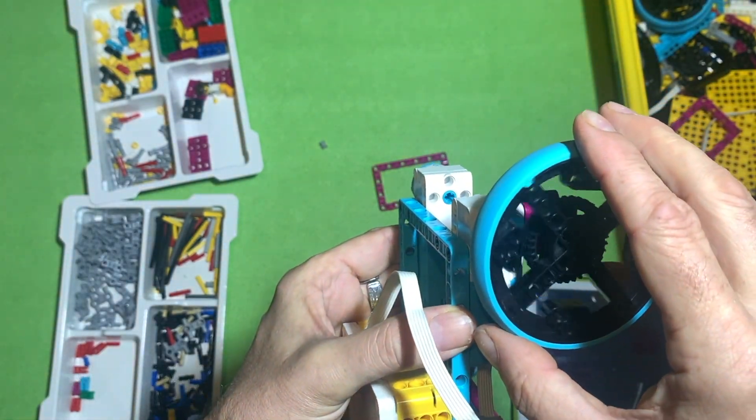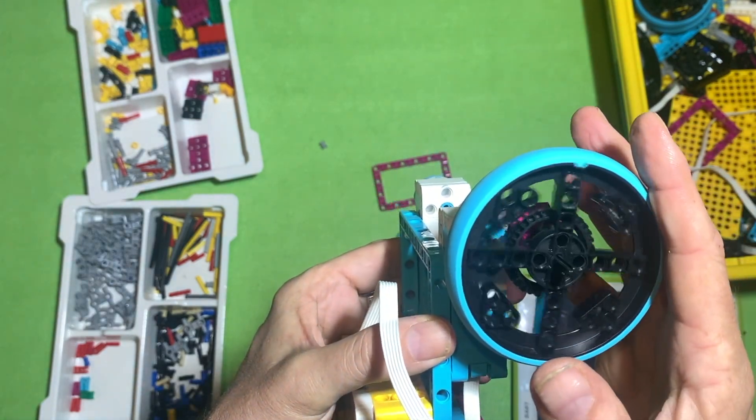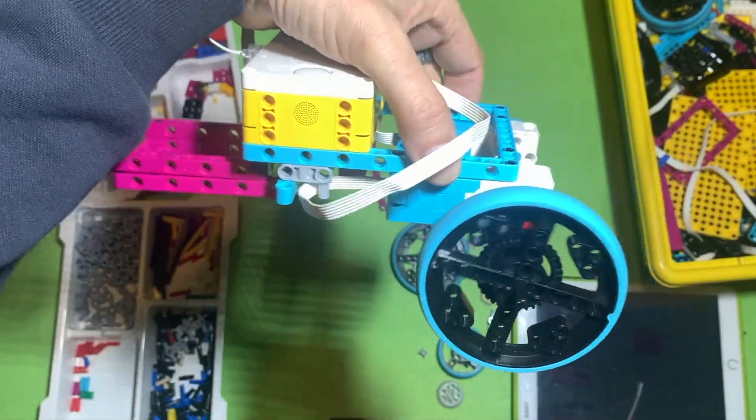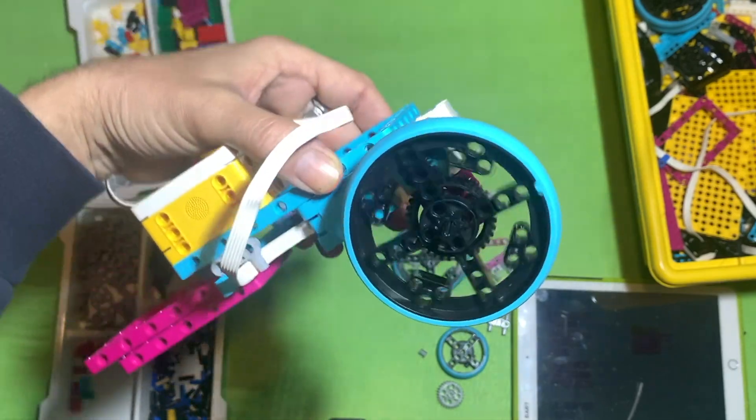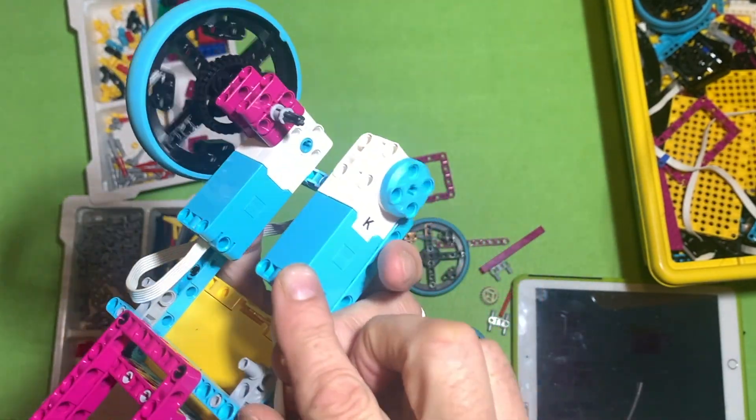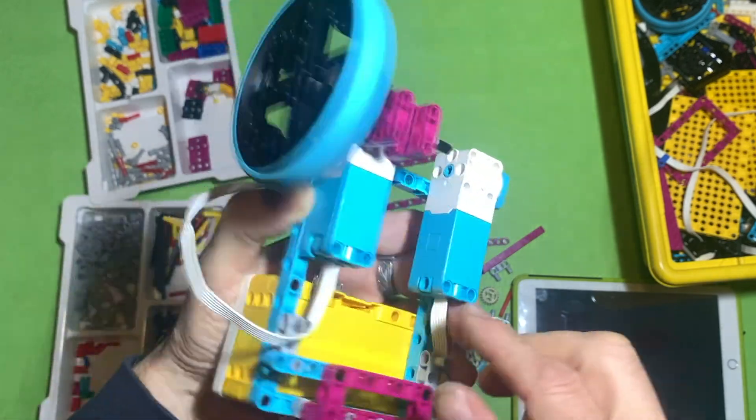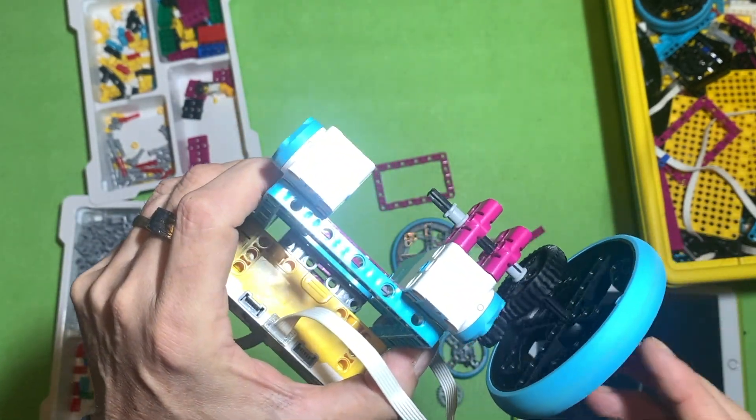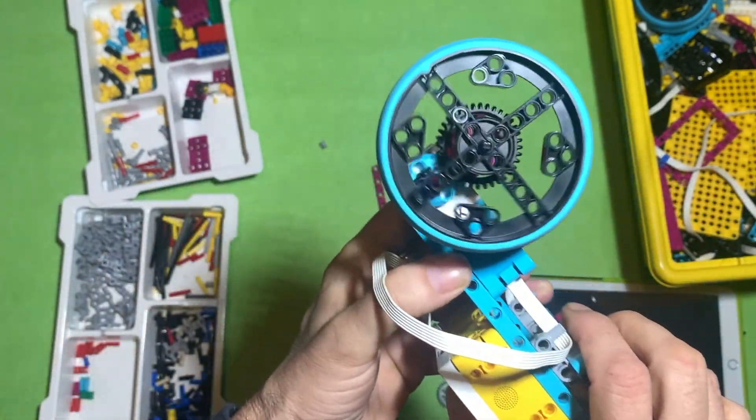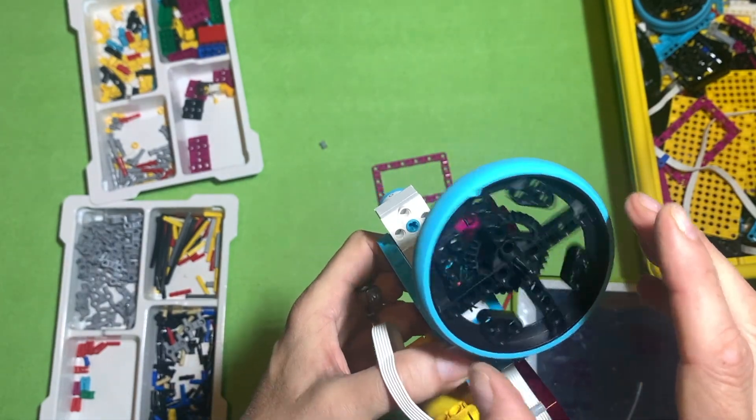You can see now that this wheel has got more torque or more power because the little cog is turning the big cog and the little cog needs to turn lots of times for the big cog to do even one rotation. So it actually creates more torque or more power.